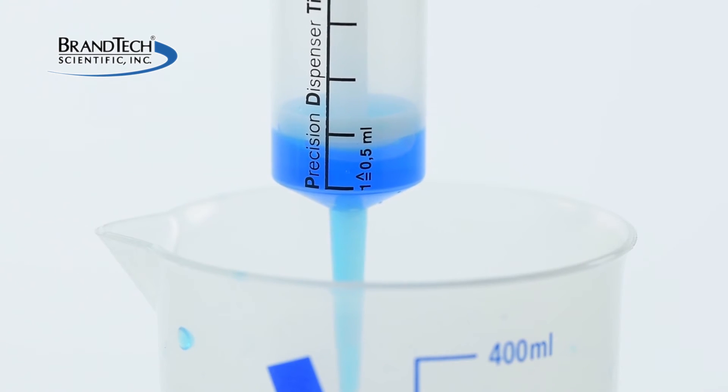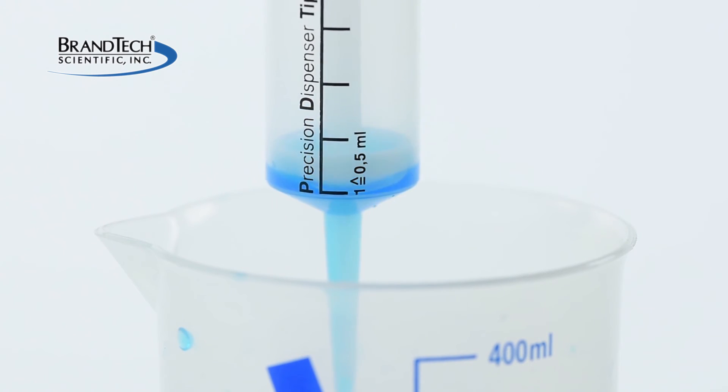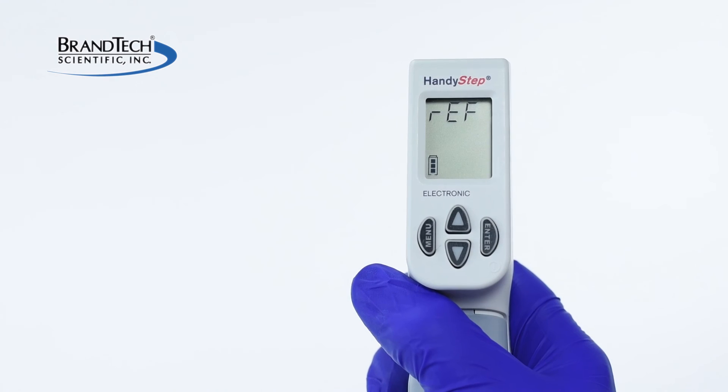The piston will move to the lowermost position, ejecting all residual liquid, and then make a reference movement to identify the tip size. The HandyStep is now ready to be used.